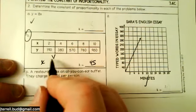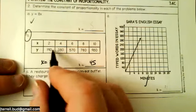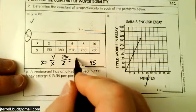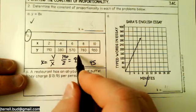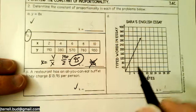Remember k is y divided by x. So that's going to be 190 divided by two, which is 95. So every one of these, if I divide y by x, I get 95, not 45. So I think you may have just wrote the wrong number there.